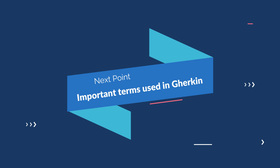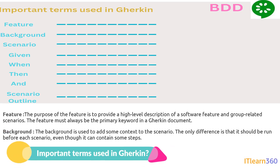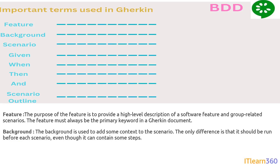Here are a few important terms used in Gherkin — these are the keywords we use while writing Gherkin syntax. The keywords are: Feature, Background, Scenario, Given, When, Then, And, and Scenario Outline. All of these keywords play an important role in writing a Gherkin syntax.